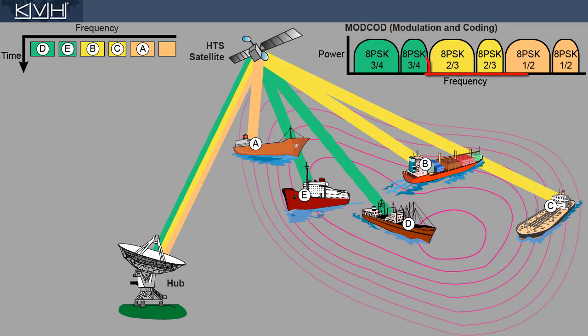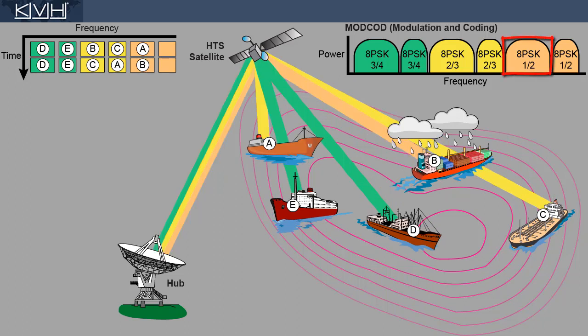Vessels further away are assigned the same modulation, but require more robust error correction due to the weaker signal. Now it starts to rain at vessel B's location, which reduces the signal-to-noise ratio, or SNR. To ensure no data is lost during transmission, the vessel simply hops onto an in-route with expanded error correction.